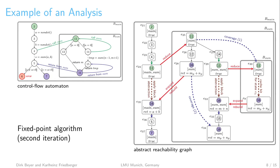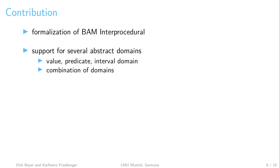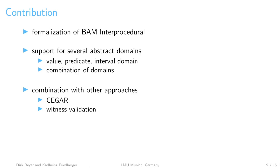We have seen a sound analysis of a recursive program done by the interprocedural approach of block abstraction memorization. Our work not only contributes a formalization of this interprocedural program analysis technique, but also defines the necessary operators for three different abstract domains: the value domain, the predicate domain, and the interval domain, which differ in their representation of abstract information in the state. Based on the CPA concept, we also allow a combination of domains. Our approach does not need to be applied alone — it can be combined with different approaches like counter-example guided abstraction refinement or witness validation.